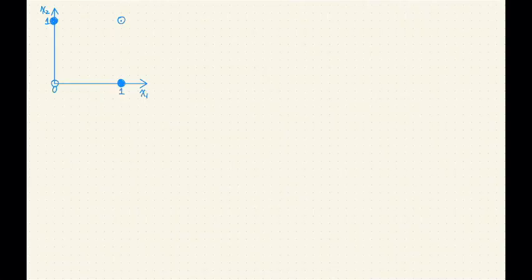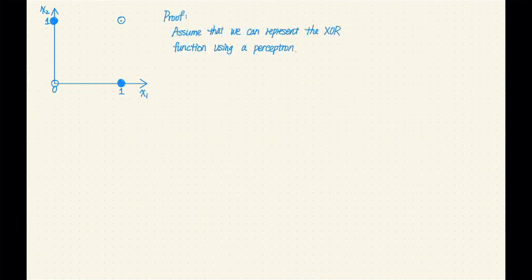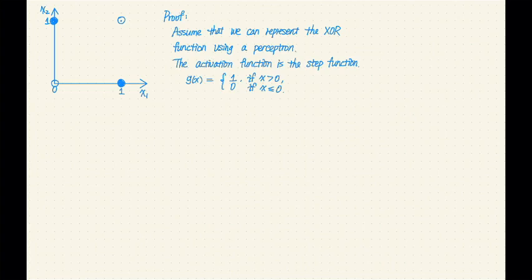I've drawn the examples for the XOR function again. Now, this proof starts by assuming that we can represent the XOR function using a perceptron. We're going to assume that the activation function is a step function, just to make our argument simpler. Given our assumption, the weights W01, W11, W21 need to satisfy the following inequalities.